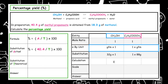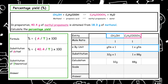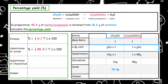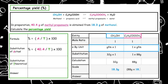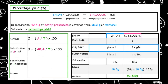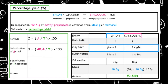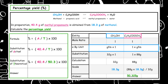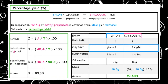So 32 grams of methanol should produce 88 grams of methylpropanoate. However, in the question we've been given 18.3 grams of methanol, so we cross-multiply: 88 times 18.3 divided by 32 gives us 50.325 grams. We round that to one decimal place — 50.3 — because the question gives information to one decimal place. So we do 40.4 divided by 50.3 times 100, giving a percentage yield of 80.3%.